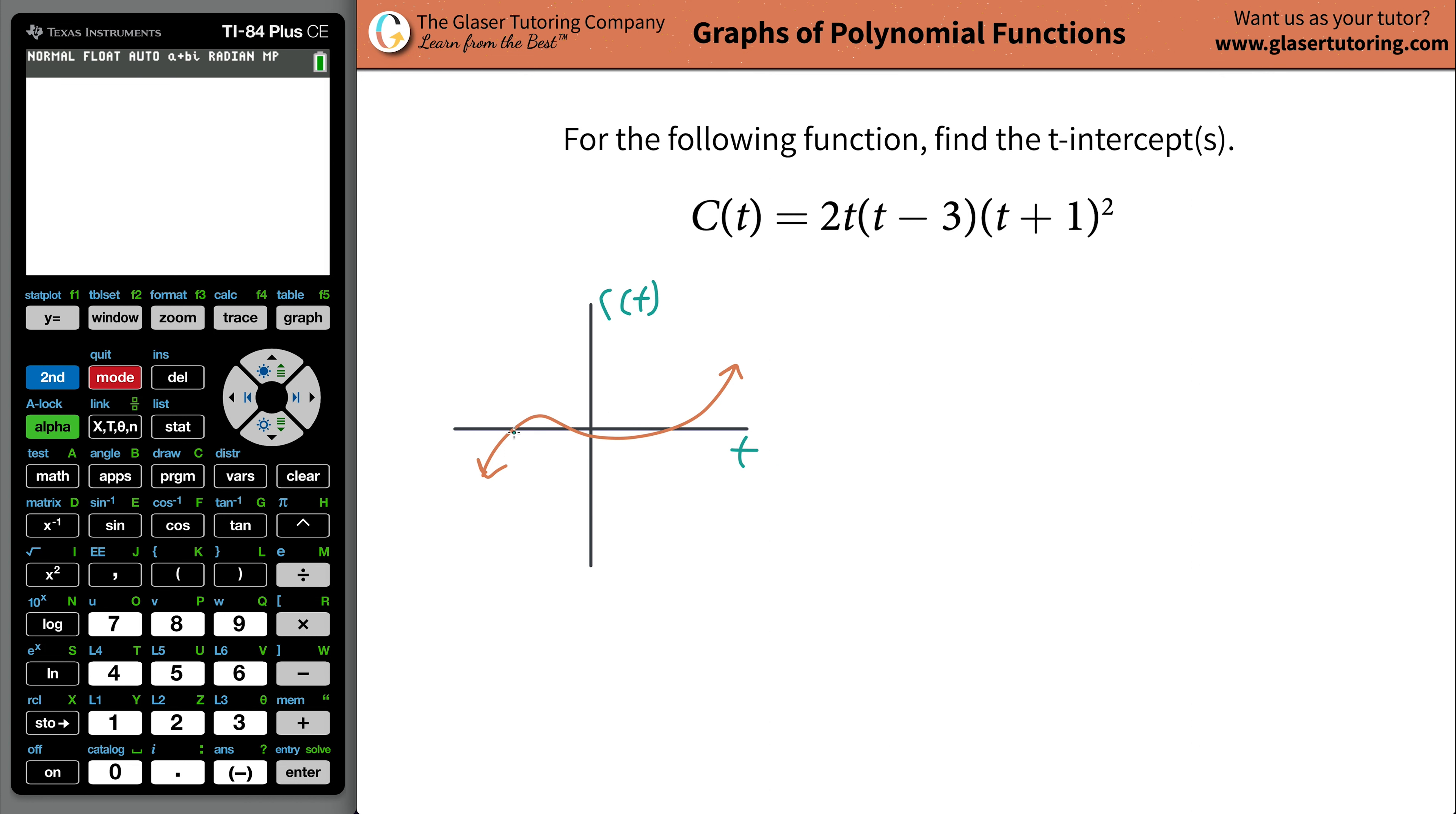So what the t-intercepts will be is, it will be the values of the points, specifically the t-values of the points, where the function crosses the t-axis. Now it turns out that in this picture, you know something unique about these three points. You still know a value that these three points have in common. Do you know what it is? Take a minute.